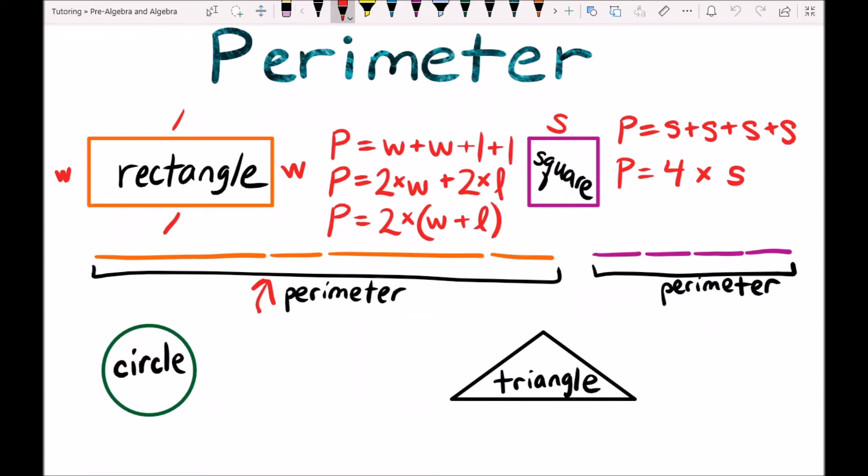Let's do the triangle next. So the triangle doesn't really have a special formula because a triangle can have all sorts of different lengths. No two sides of a triangle have to be the same.